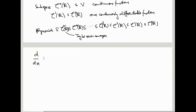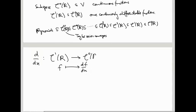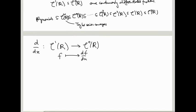So now we have this broader setting for doing linear algebra, and we can look at things like differentiation as a linear map. To differentiate, you need a differentiable function, so you start with something in C¹ — once continuously differentiable functions. If you have f there and take df/dx, you get a continuous function in C⁰(R). So differentiation is a map from C¹ to C⁰. Alternatively, it could be a map from Cᵏ to Cᵏ⁻¹ for any k — when you differentiate, you have one fewer time left that you can differentiate. And this is a linear map.